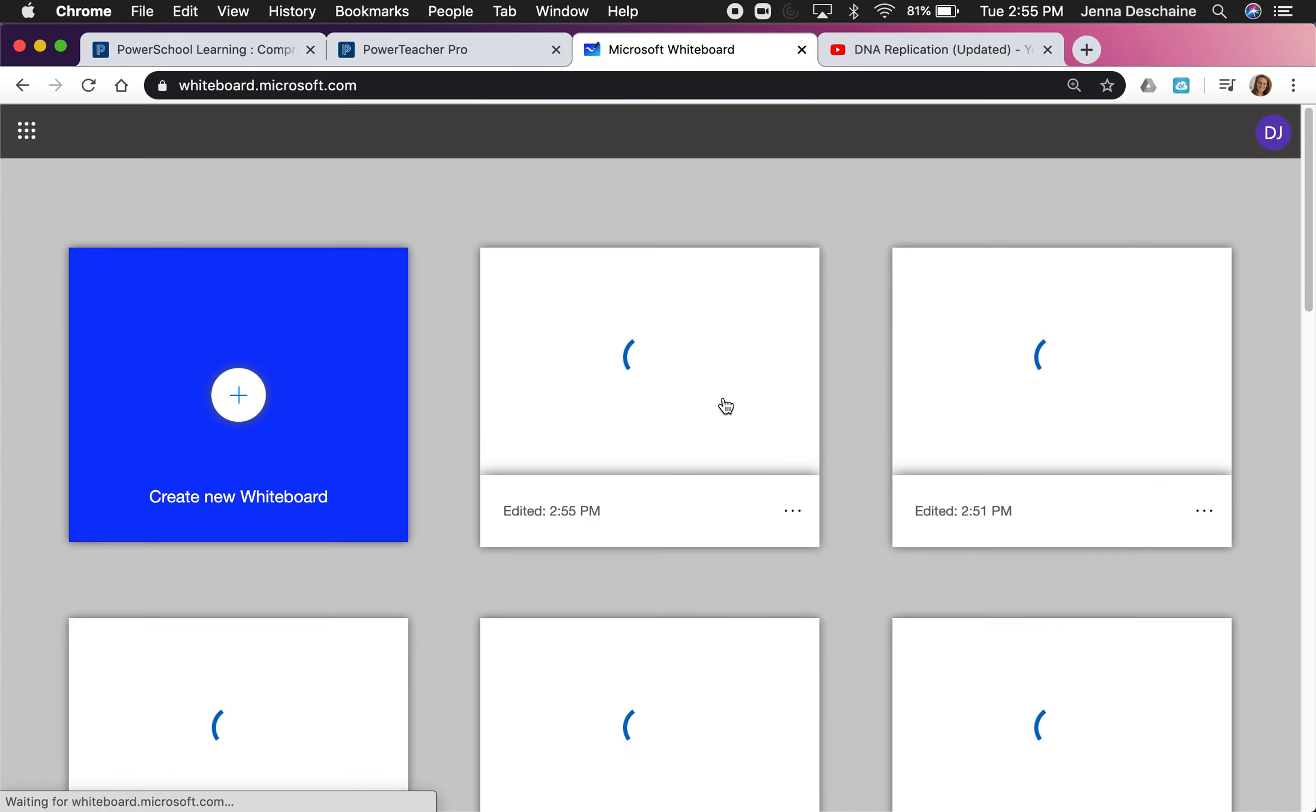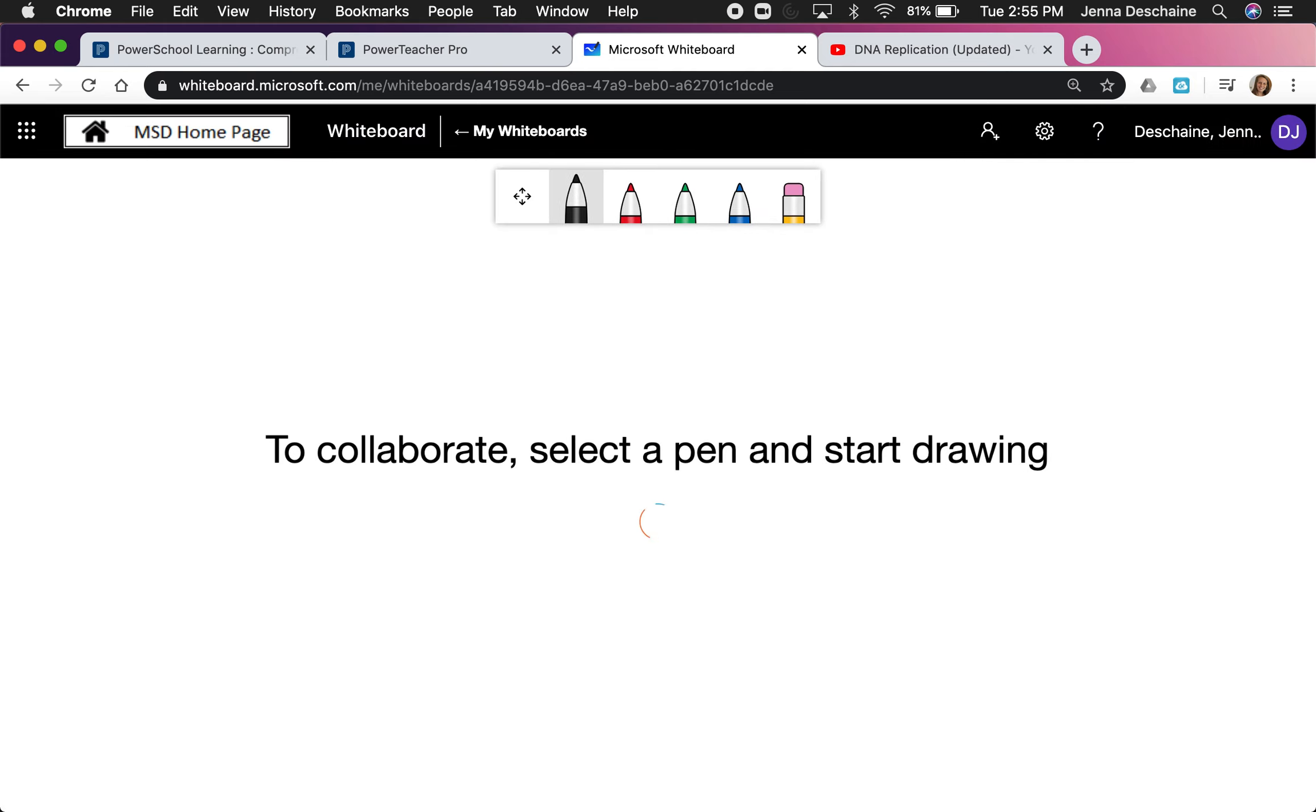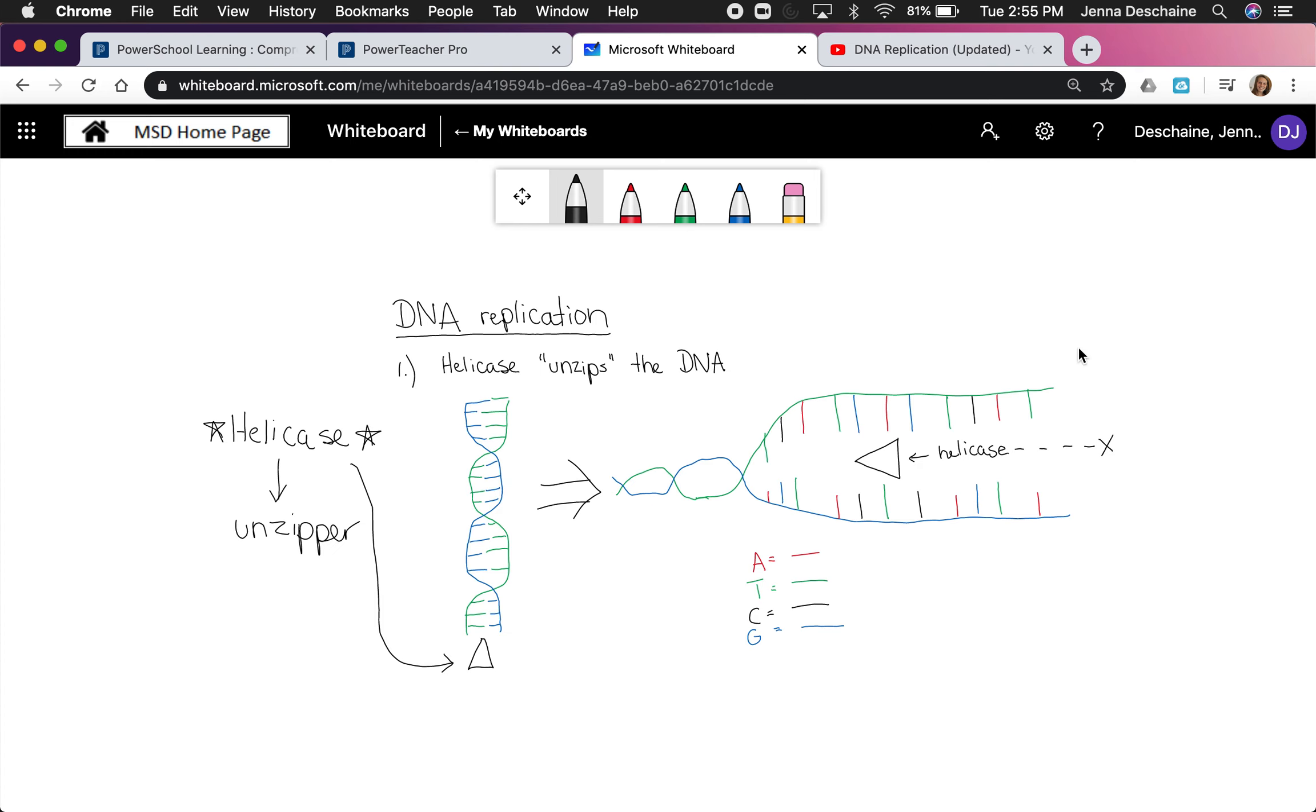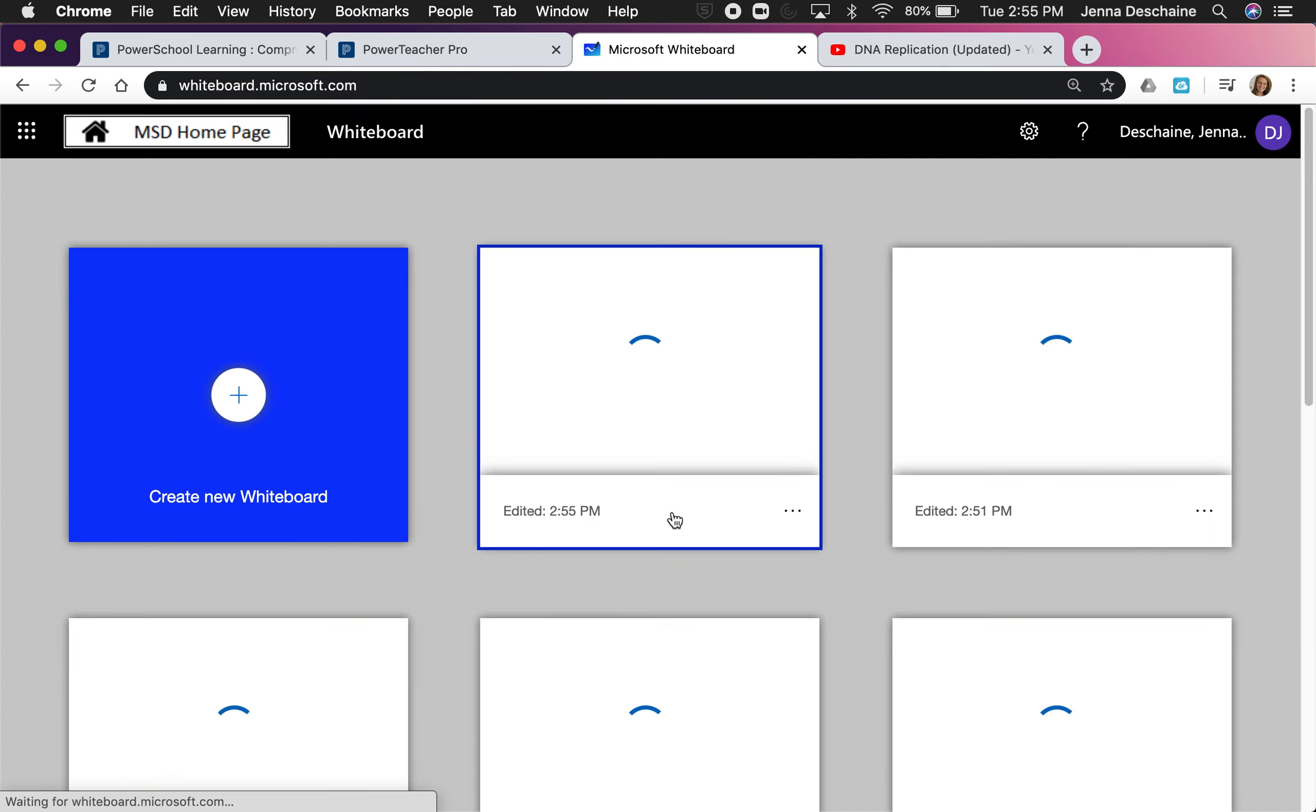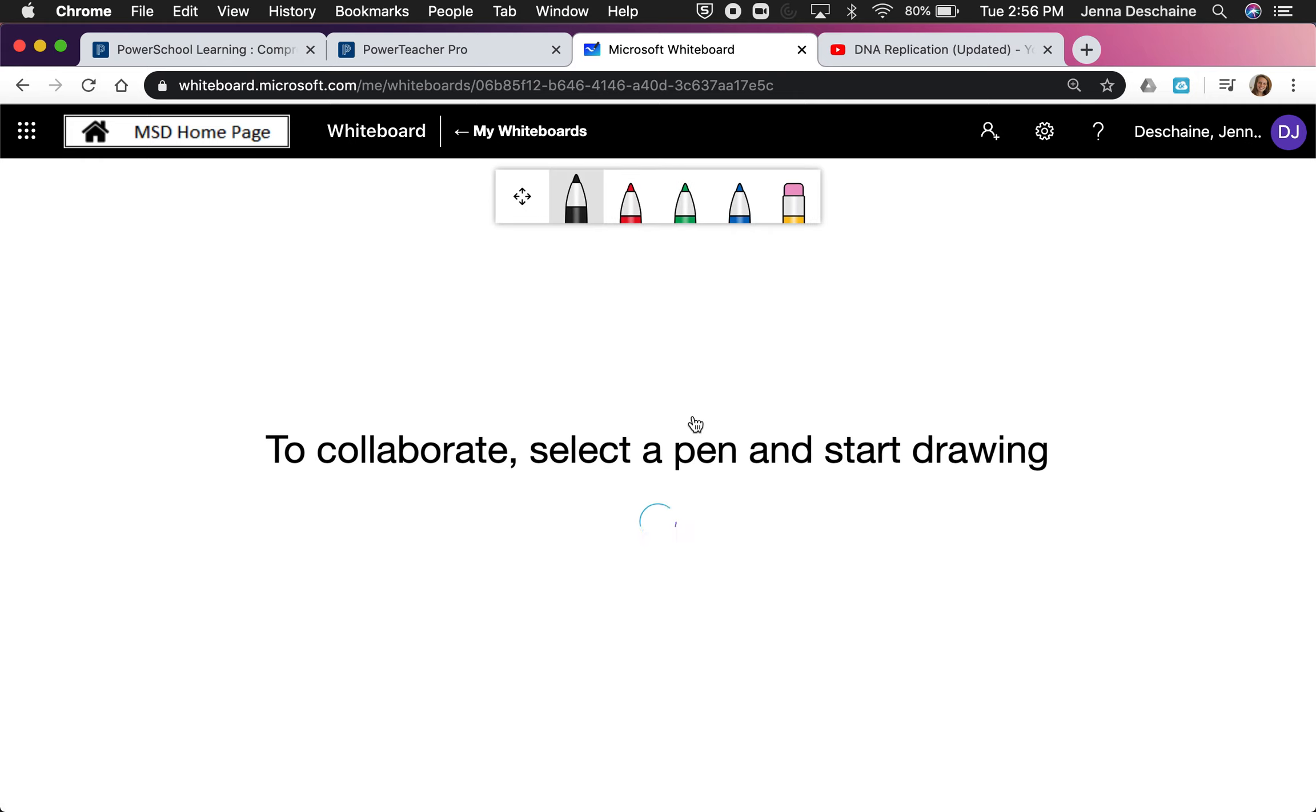Something else I forgot to do that I want to go back and show you is I did include the nitrogen bases in our DNA molecule, and I also included a key as to what they are. In our DNA molecule that we're dealing with, I did have our four bases labeled in different colors. A is going to be represented by the color red, T is represented by green, C is represented by black, and G is represented by blue.